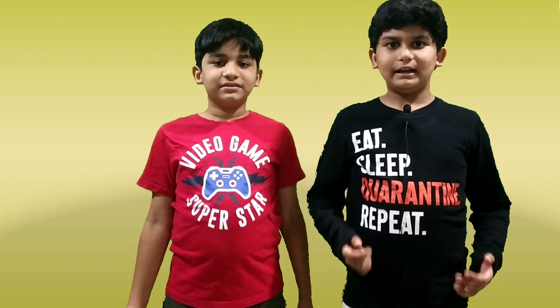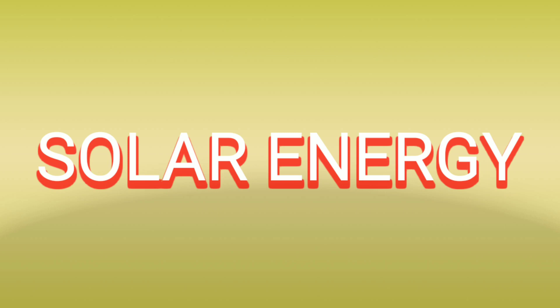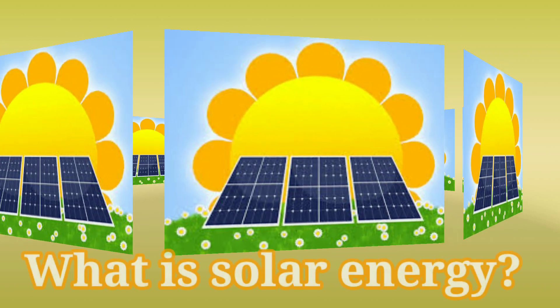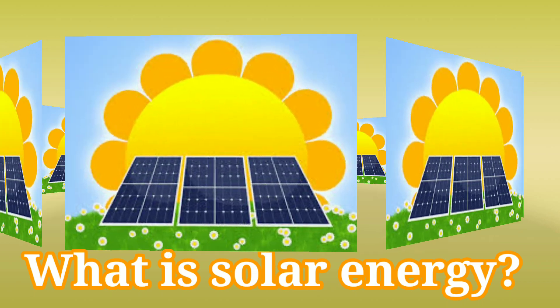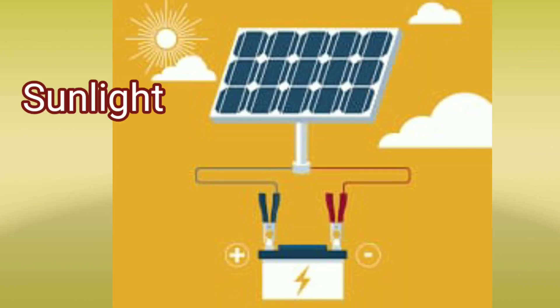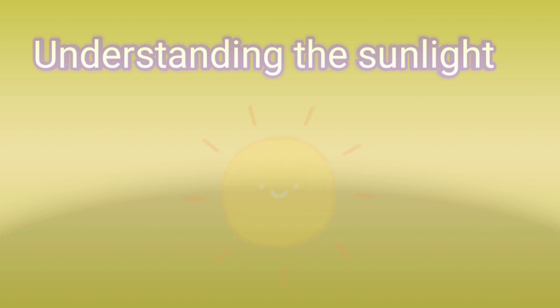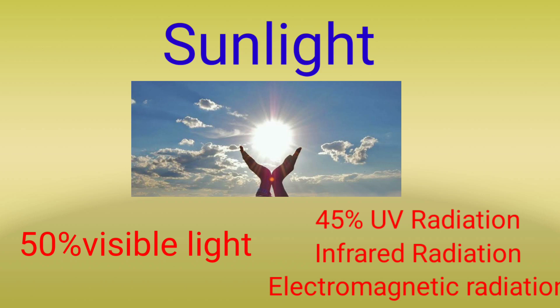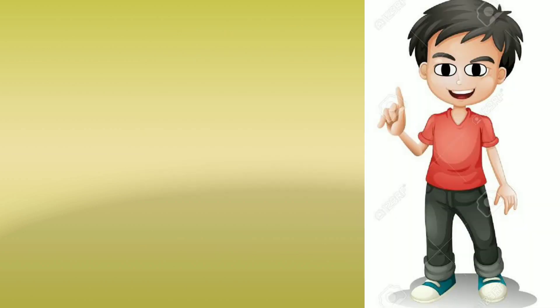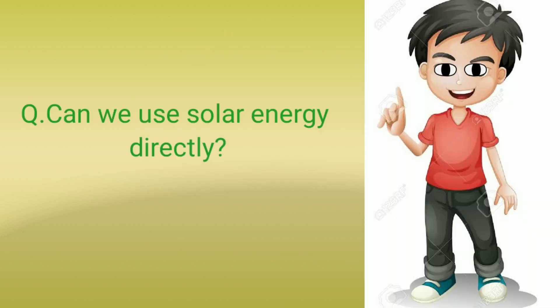Now let's get moving with our first renewable energy: solar energy. What is solar energy? Solar energy is the conversion of sunlight into electrical energy, thermal energy, or chemical energy. What is sunlight composed of? Sunlight is composed of 50% visible light, 45% infrared radiation, UV radiation, and other electromagnetic radiation.